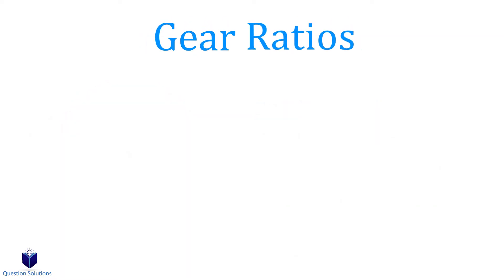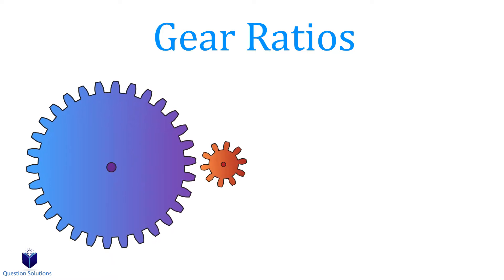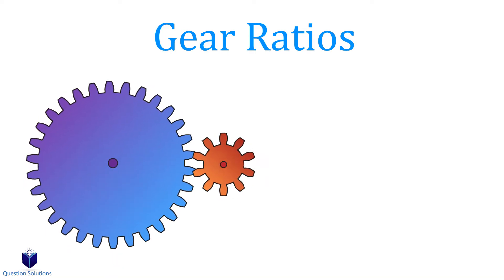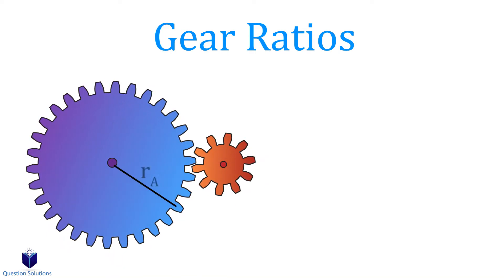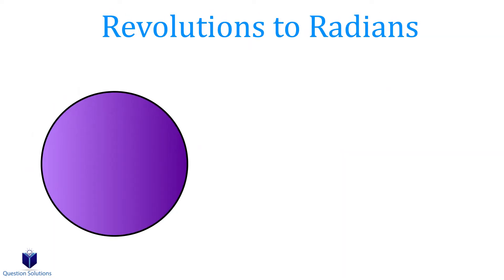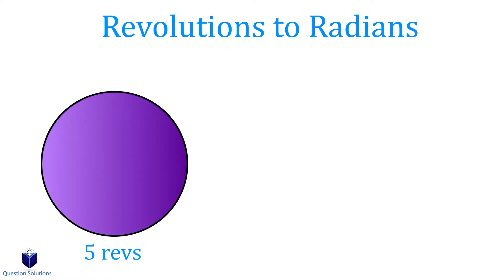Let's quickly discuss gear ratios. Imagine we have two gears of two different sizes. When one spins at a certain rate, the other spins at a different rate. We can relate them by using the radius of each gear and their respective position, velocity, or acceleration. In some problems, instead of rads per second, we're given values in revolutions. Remember that 1 revolution is equal to 2π rad. So if we have 5 revolutions, it's 2π multiplied by 5, meaning 10π rad.